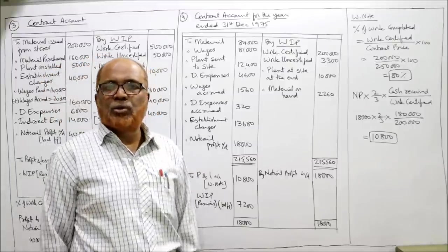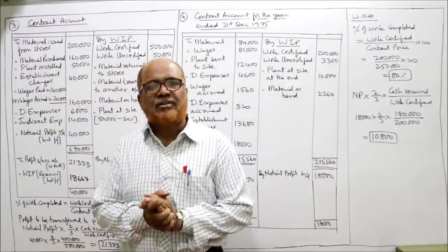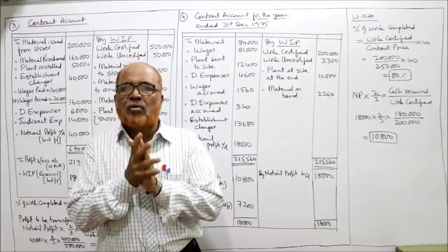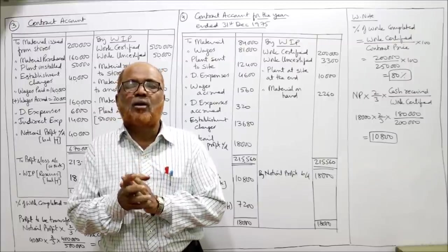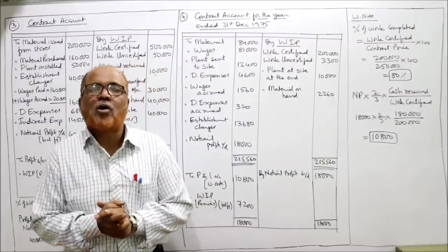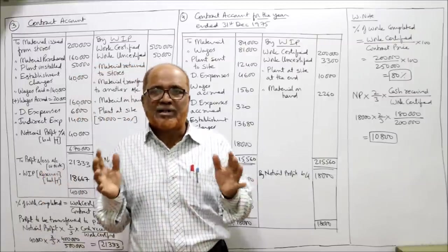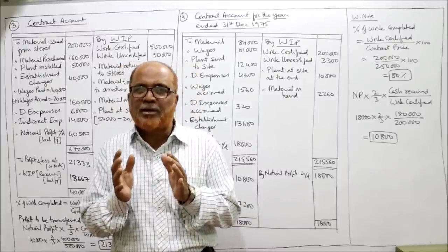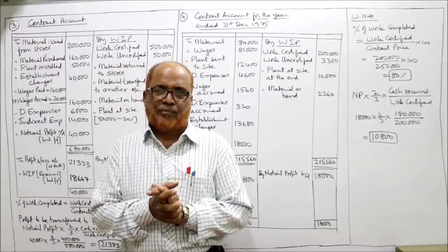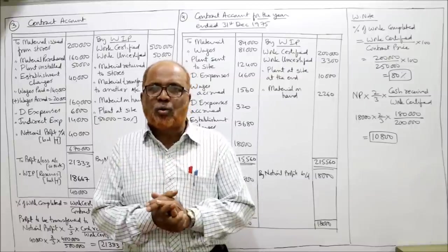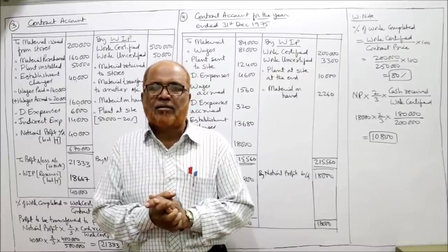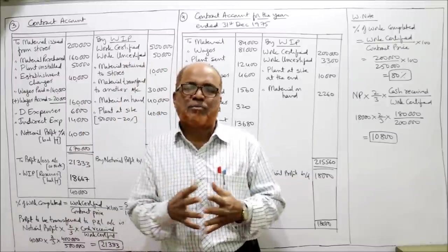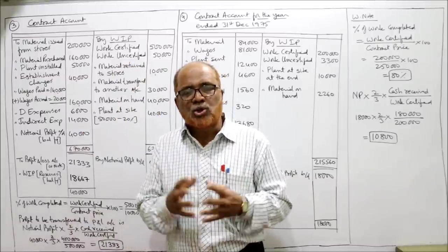From notional profit of 18,000, profit to P&L = notional profit × 2/3 × cash received ÷ work certified = 18,000 × 2/3 × 1,80,000 ÷ 2,00,000 = 10,800. The remaining 18,000 − 10,800 = 7,200 is transferred to reserve. That is the end of problem four. We have completed all four main problems in detail. If you are satisfied, please like, share, and subscribe to the channel. We will continue with the remaining problems in the next video.